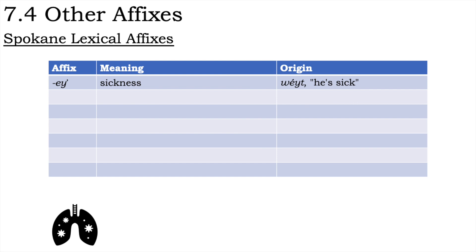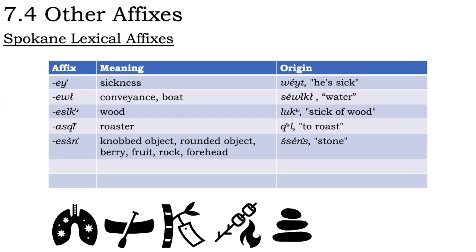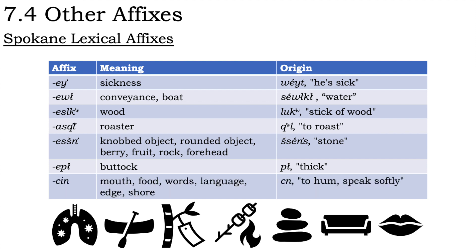Further Spokane lexical affixes: -e 'sickness,' from weit 'is sick'; -awsh 'conveyance or boat,' from sawilch 'water'; -aslqu 'wood,' from lluw 'stick of wood'; -asqal 'roaster,' from qul 'roast'; -asshn 'knobbed object, rounded object, etc.,' from shsens 'stone'; -eps 'buttock,' from ps 'thick'; and -sin 'mouth, food, words, language, edge or shore,' from sn 'to hum or speak softly.'